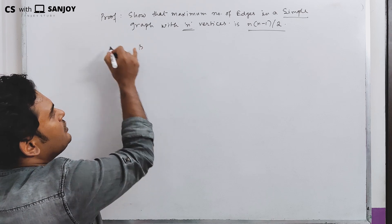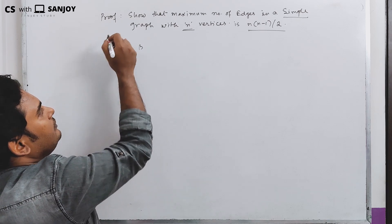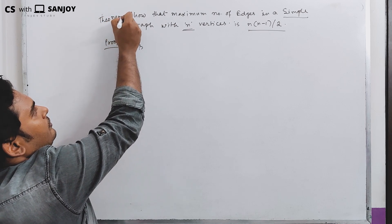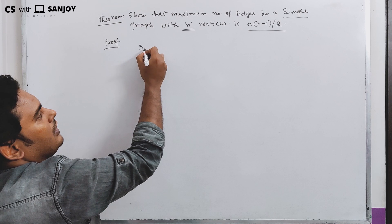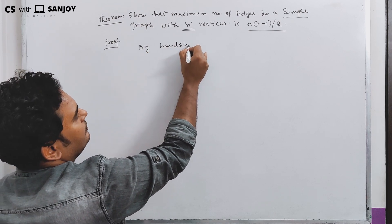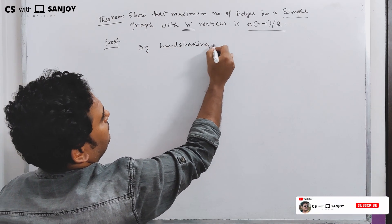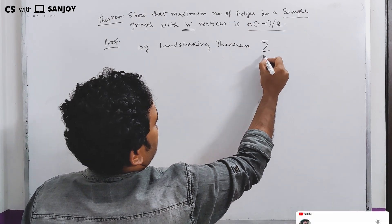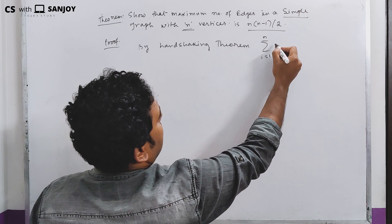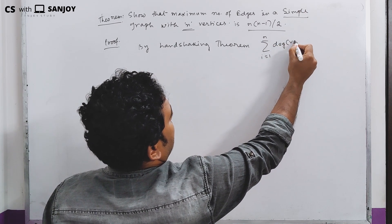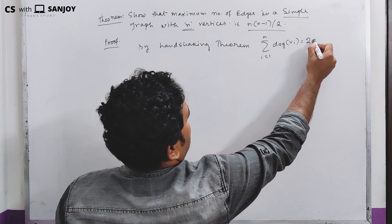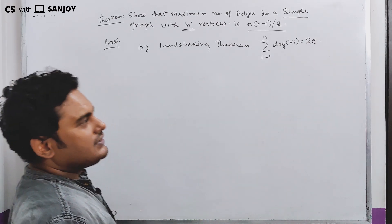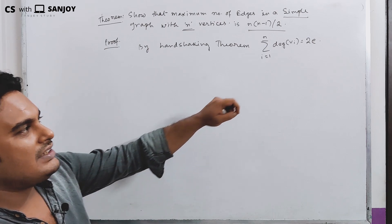We will use the handshaking theorem to prove this. By the handshaking theorem, the summation over i equals 1 to n of the degree of vi equals twice of e, where e is the maximum number of edges.